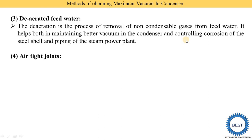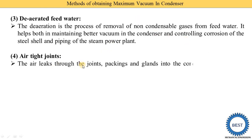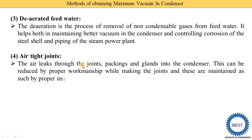The fourth method is airtight joints. In a condenser there are various joints, and we need to make these joints airtight so that air does not enter from the atmosphere into the condenser. Air can leak through joints, packings, and glands into the condenser. These leaks can be reduced by proper workmanship while making the joints, and maintained by proper inspections from time to time to check for air leakage from various joints.